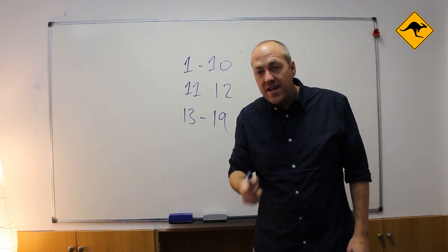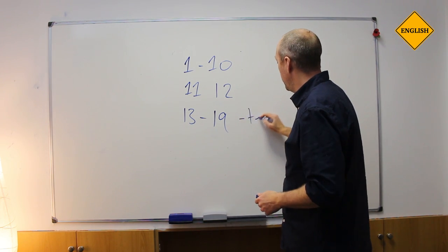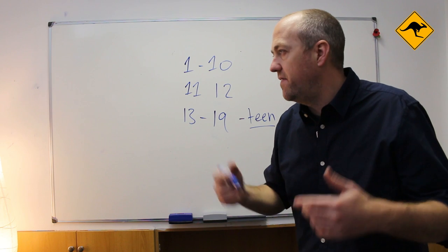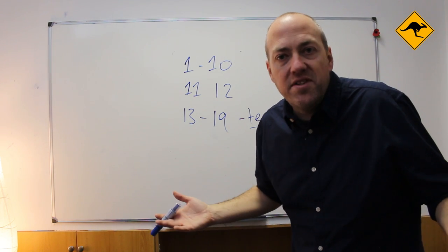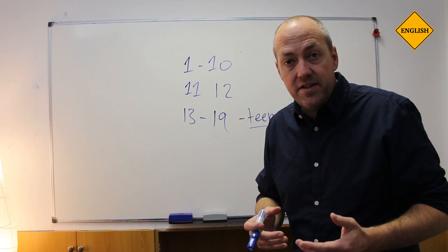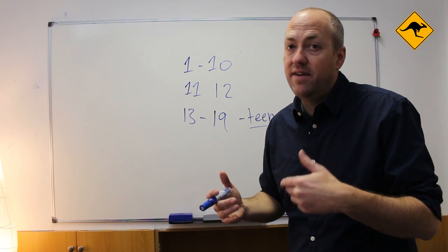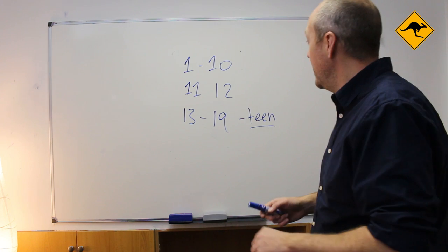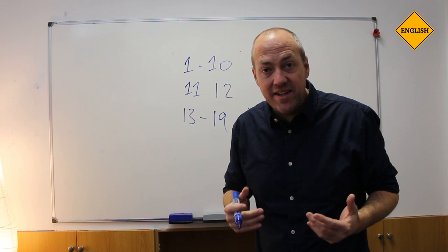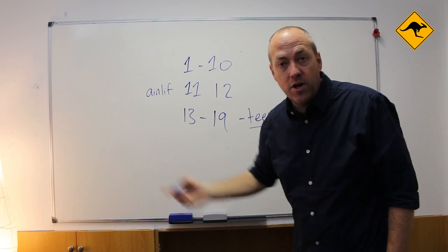So you will notice here that numbers 13 to 19 all have 'teen' after them: 13, 14, 15, 16. What does this mean? Teen means 10. So 13 is 3 plus 10, 14 is 4 plus 10, 15, etcetera. But 11 and 12 are different. Why? 11 comes from the Old English 'one-lif' and 12 comes from the Old English 'two-lif'.